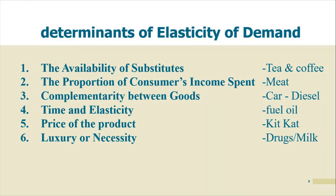Fifth determinant is the price of the product — if you're buying KitKat but the money needed is much more than you can afford, you'll stop buying it. Sixth is luxury versus necessity — a luxury item like a painting: if the price increases you stop buying it. But a necessity like milk — if a child needs milk you can't avoid buying it even if the price is higher. That is the necessity effect.